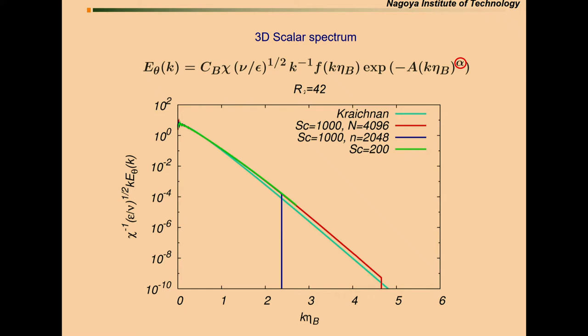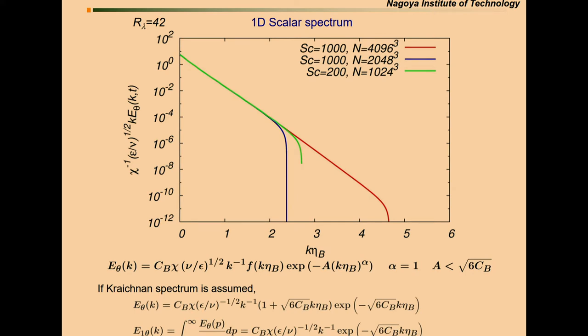This is the same plot, but in semi-logarithmic way, the 3D scalar spectrum. The Kraichnan spectra slightly decays faster than the DNS, but this is a three-dimensional plot. But if we compute the one-dimensional scalar spectrum, the three curves nicely follow the straight line, and similarly to this, the Kraichnan curves like this one. This slightly decays faster than the DNS, but close to each other.